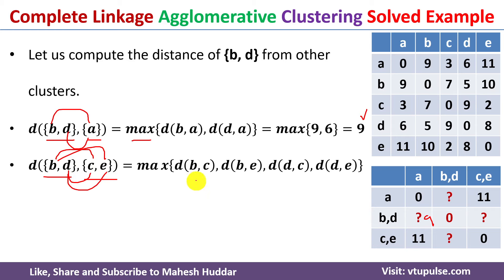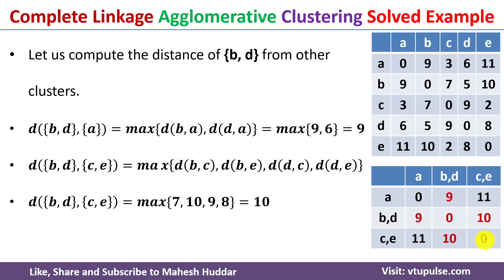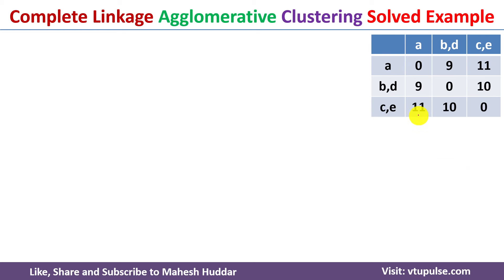Similarly, we calculate the distance from cluster BD to CE: the maximum distance among B-to-C, B-to-E, D-to-C, and D-to-E. Among all these distances the maximum is 10, so the distance from BD to CE is equivalent to 10. After putting the updated values, the updated weight matrix looks like this. After the second iteration we have three clusters.